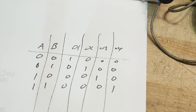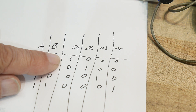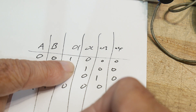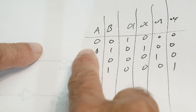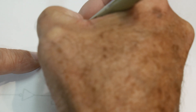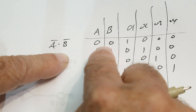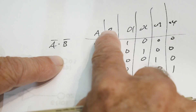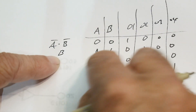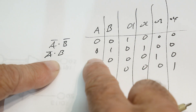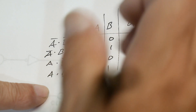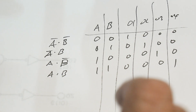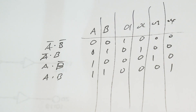We can actually write the boolean equations. For the first output we have NOT A AND NOT B — so when both inputs are low, this is true. The second output is NOT A AND B. The third is A AND NOT B. The fourth is A AND B. These are the logic expressions for what we're trying to get.